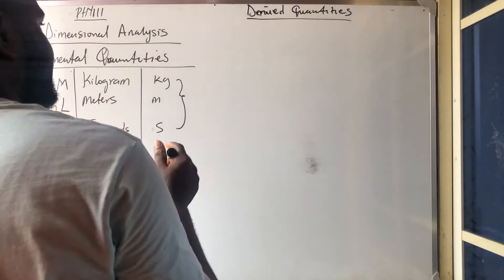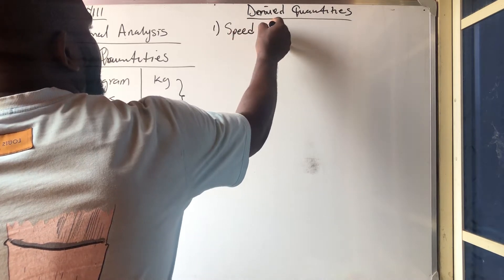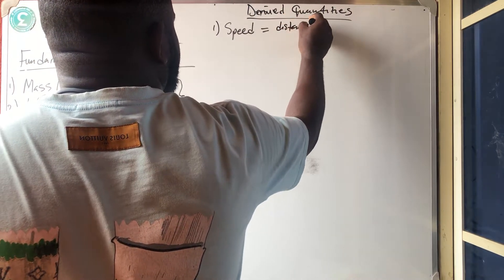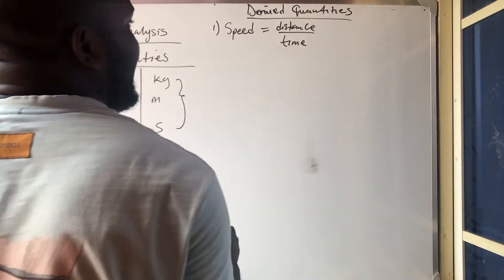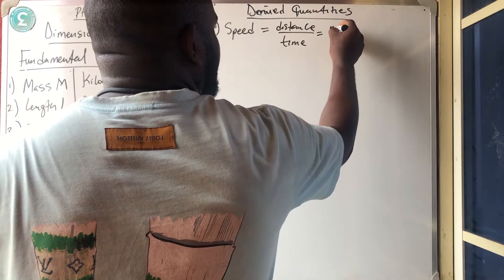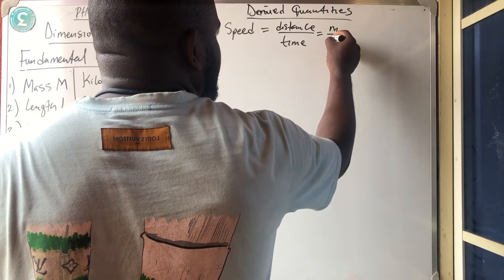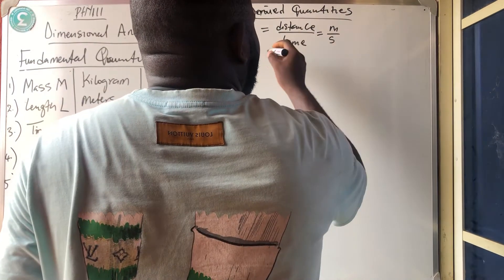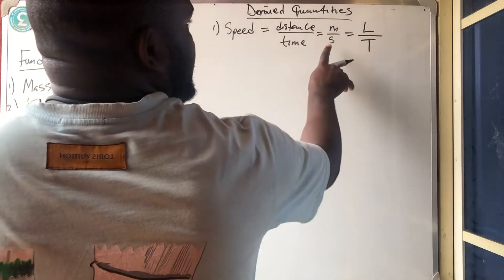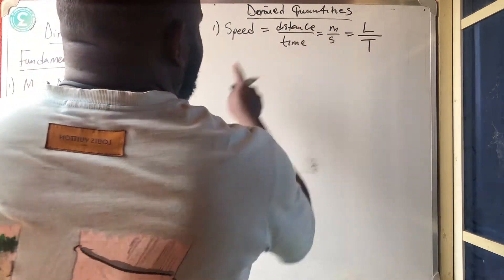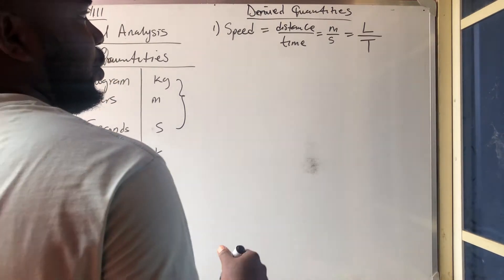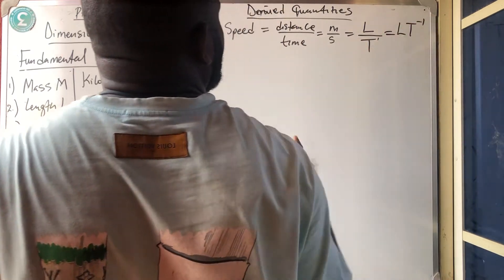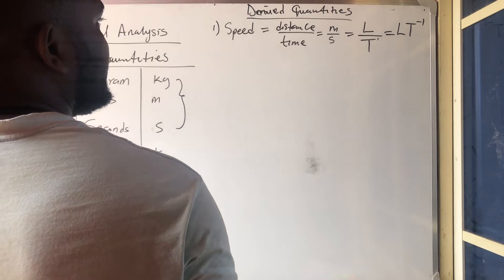Let's get the dimension analysis of some derived quantities. The first one is speed. Speed means distance over time. Distance is measured in meters while time is measured in seconds. So the dimension of speed is L over T. According to indices, since T is in the denominator, it becomes L T raised to the power minus 1. So LT⁻¹ is the dimension of speed.